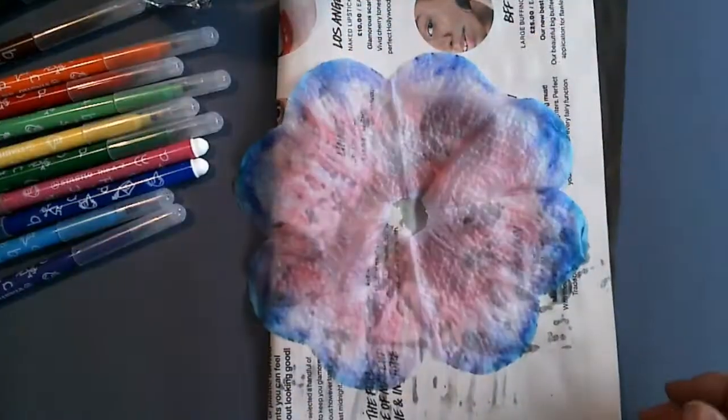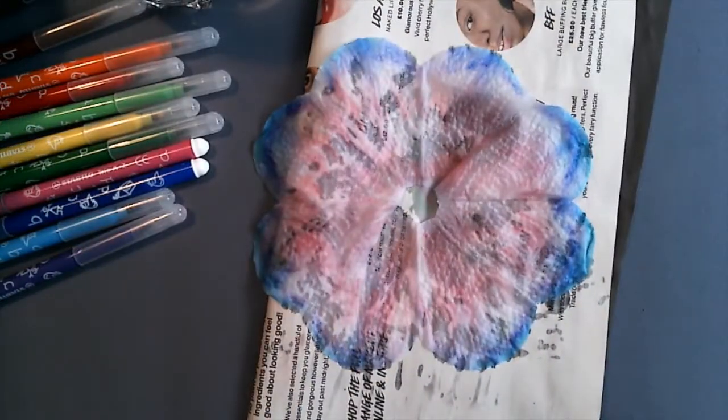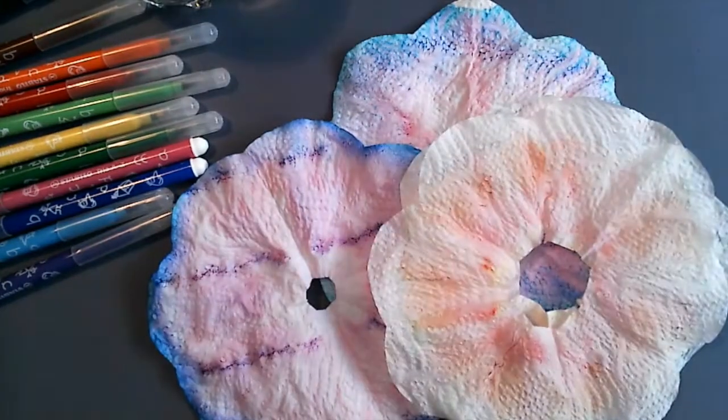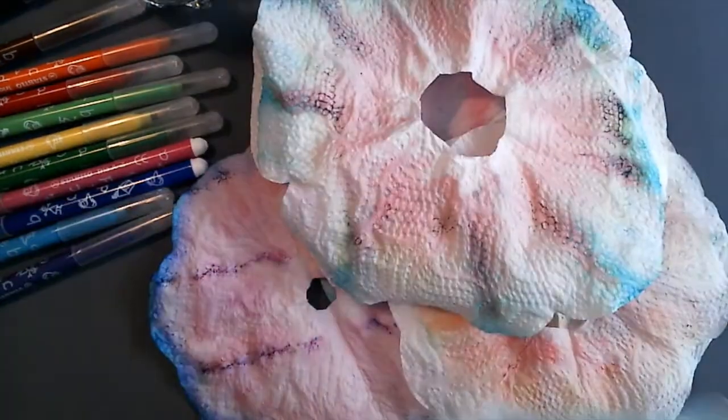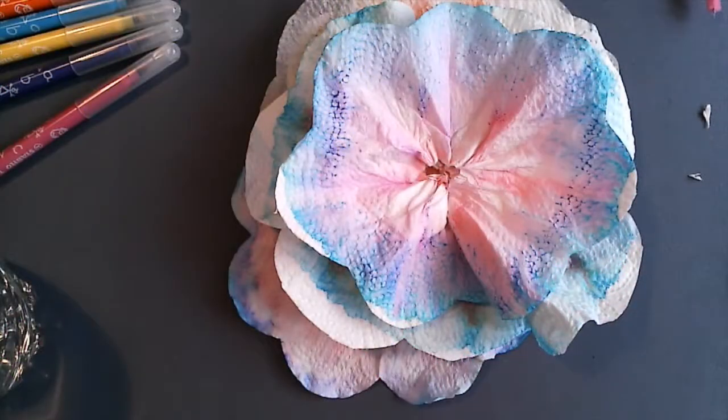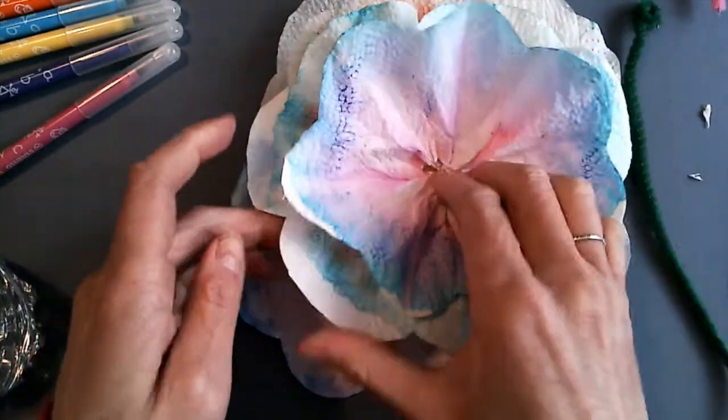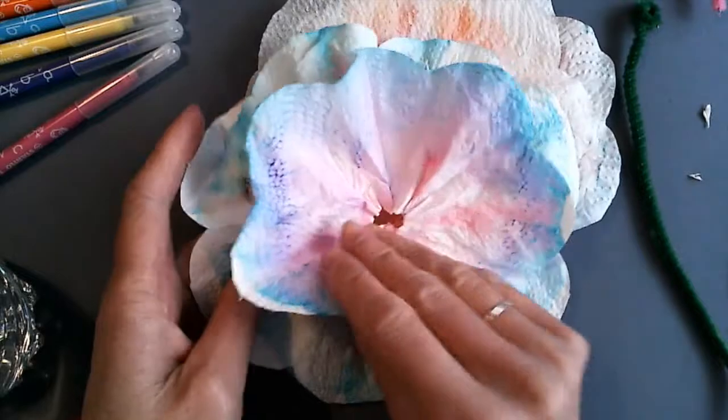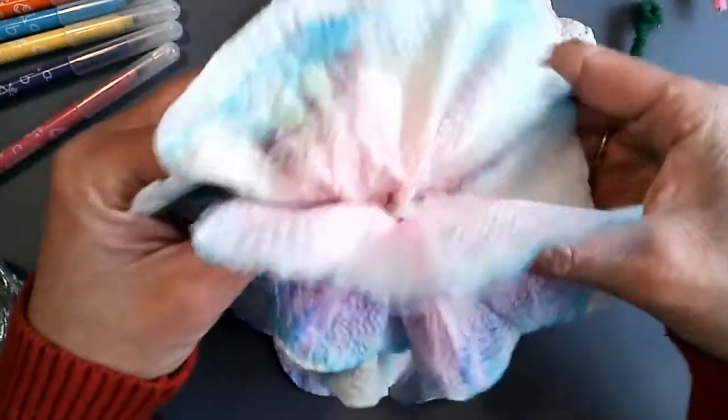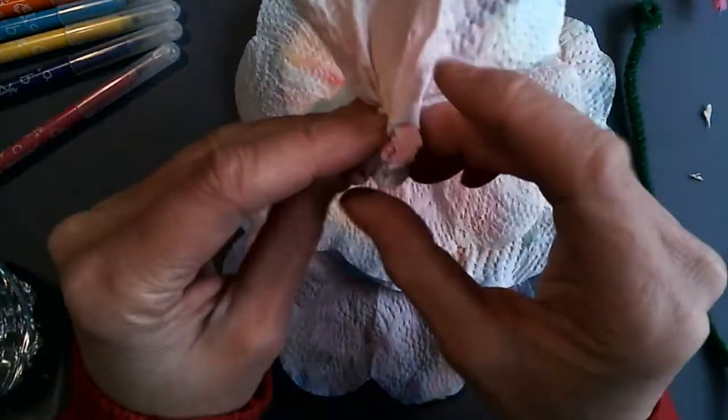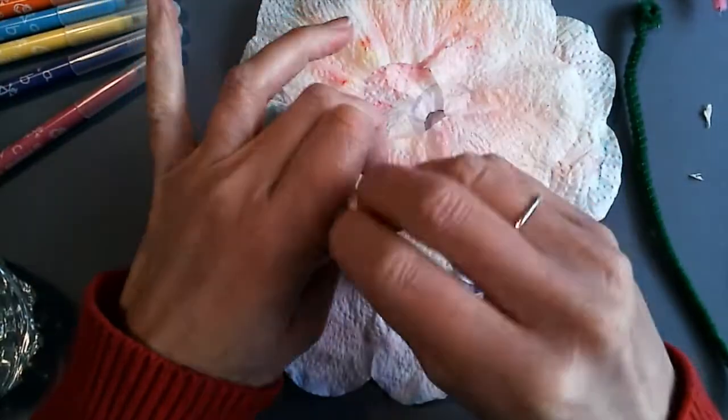Be careful because your flower will be fragile at this stage until it's dry. Here you can see a series of different paper towels using a pipe cleaner, scrunch two or more together.